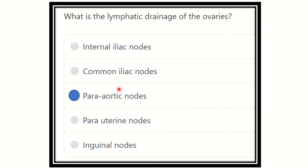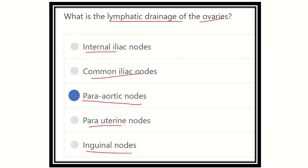So our final answer is the para-aortic lymph node. The ovary drains its lymphatics into the para-aortic lymph node. Though it is a pelvic organ, it does not drain to the internal iliac, common iliac, para-uterine, or inguinal lymph nodes. This is a very important point to remember carefully when answering questions in the exam. Thank you.